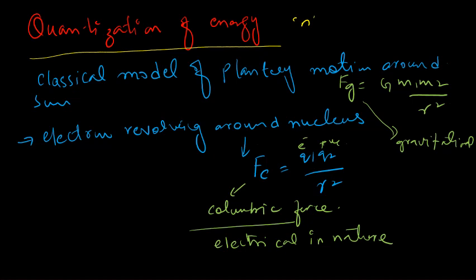This is the basic difference between the motion of a planet around the Sun and the motion of an electron around the nucleus. In the case of planetary motion, the two quantities that remain constant at all times are momentum and energy. Classically, the total energy can have any value, but it will be negative if the planet is trapped within the planetary system.